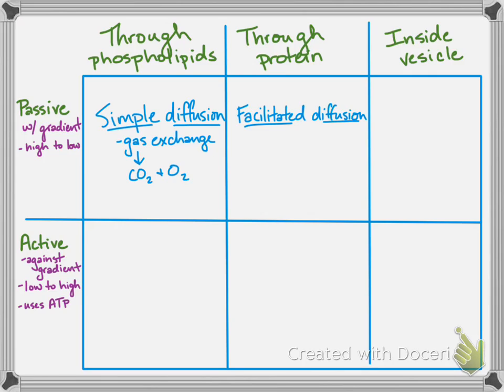Facilitated diffusion is for things that are still moving from high to low with their concentration gradient, but they're too large or charged — things like ions — to move through the membrane, because the inside of the phospholipid bilayer contains those nonpolar fatty acid tails. So these molecules must go through a protein to allow them specific ways into the cell, and there are proteins specific to all different types of molecules that need to pass in and out of the cell.